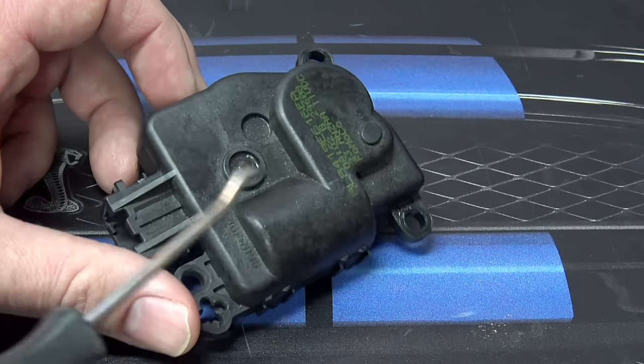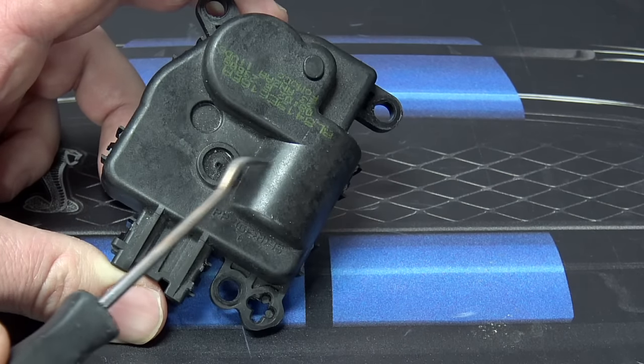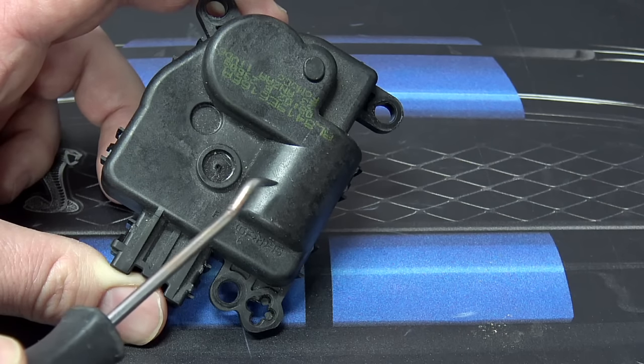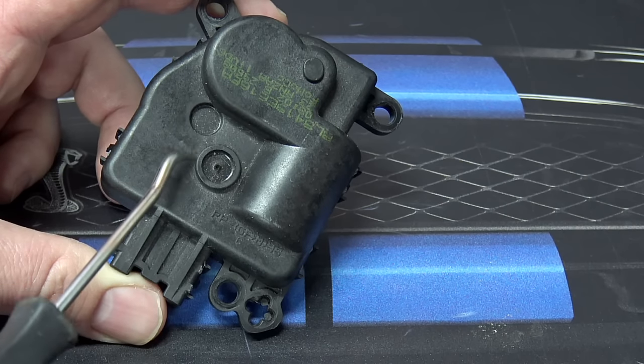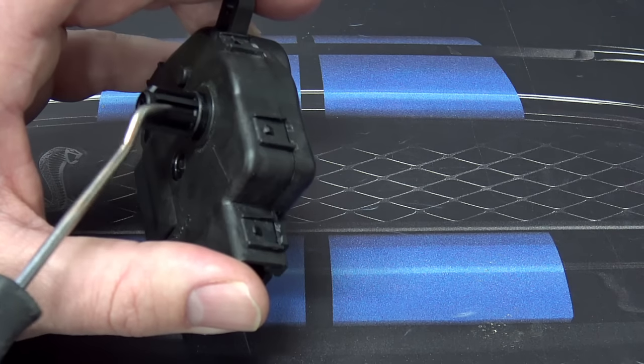What happens is these ones don't have broken teeth on the inside causing loss of control or clicking noises. They lose their position. The motor in here, the output shaft, actually loses position, so then it starts hunting or quits and gives up to the next key cycle.